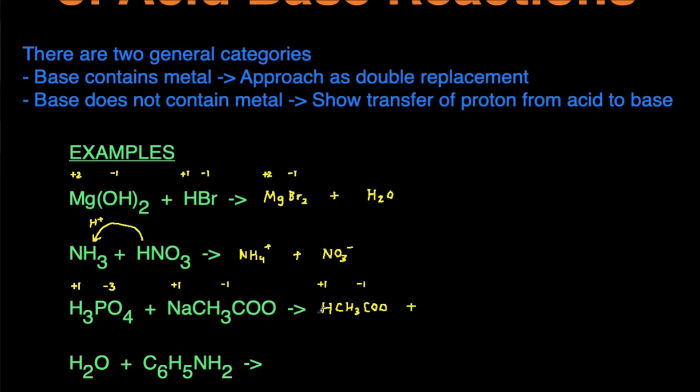Then the second product is going to be the Na going with the PO4. So I have NaPO4, carry the charges over. Na is a positive 1 charge, PO4 was 3 minus charge. These don't cancel out, so I use the crisscross method, meaning I'm going to have three sodiums for every one phosphate, giving us Na3PO4.